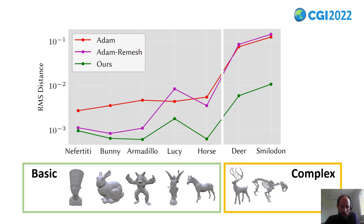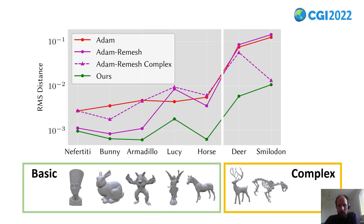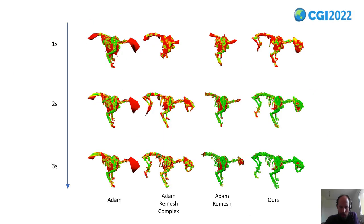Then I made a final test. I used the Adam optimizer with remeshing and I tuned it for the two complex objects. That gave much better results for the smilodon object, but at the same time, worse results for the five basic meshes. The problem is simply, as you can see here, that the complex tuned Adam with remeshing method uses much larger triangles.